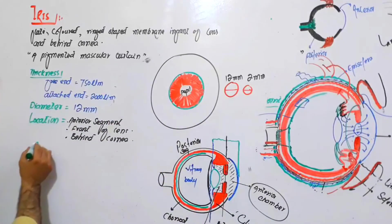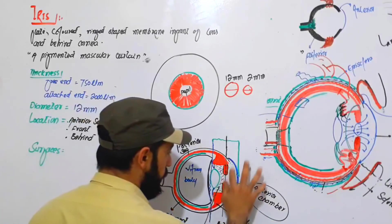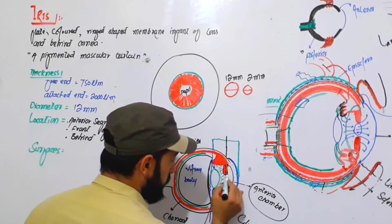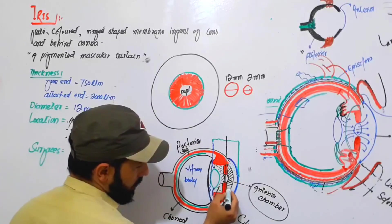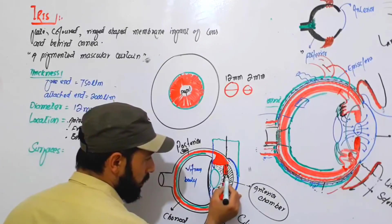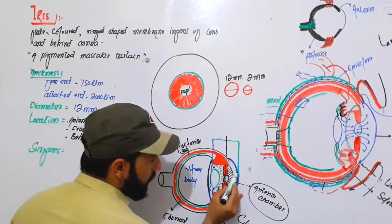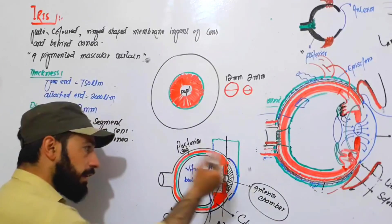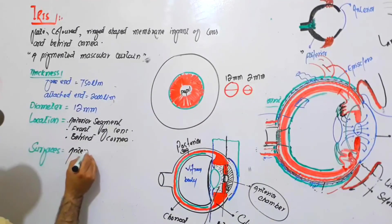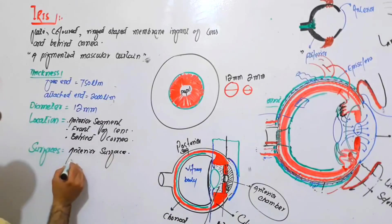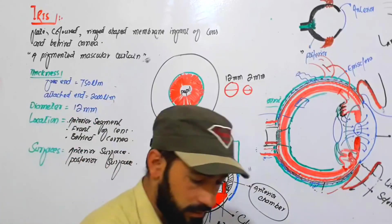How many surfaces does the iris have? It has two surfaces. Looking at it three-dimensionally, with the central hole being the pupil, there is an anterior surface — also called the corneal surface — and a posterior surface — also called the lens surface.